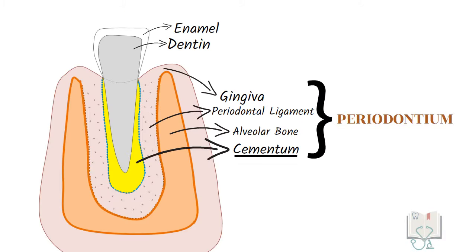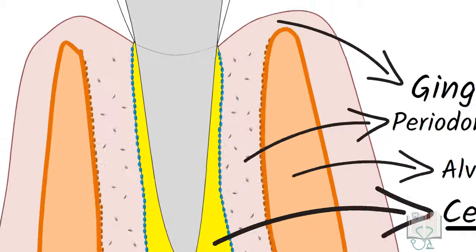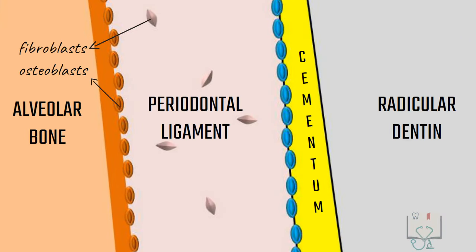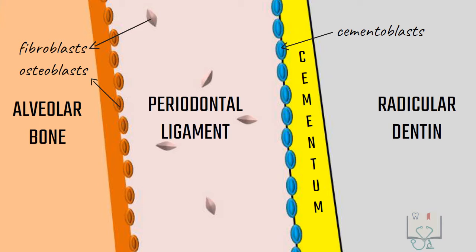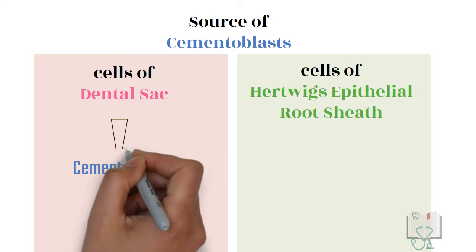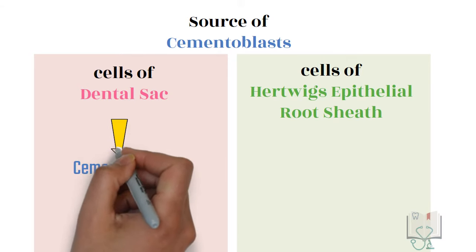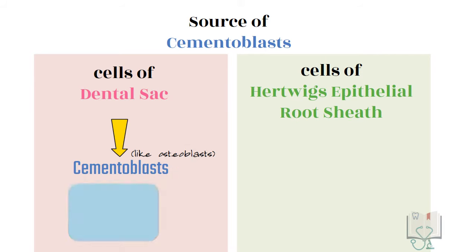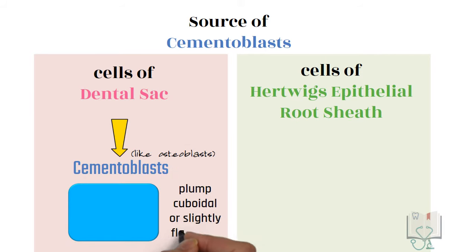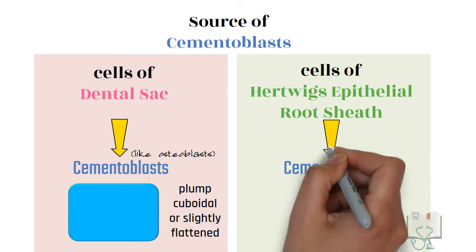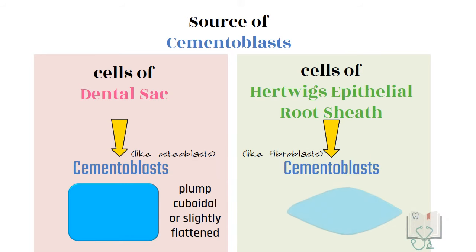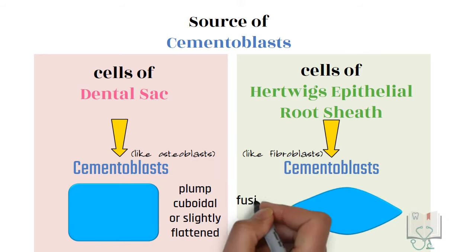Cementoblasts: In the periodontium, on looking closely, we see cementoblasts present at the periphery of the cementum towards the periodontal ligament. Cementoblasts differentiating from the cells of the dental sac are similar to osteoblasts — they are plump, cuboidal, or slightly flattened cells. Whereas cementoblasts differentiating from the cells of Hertwig's epithelial root sheath are similar to fibroblasts — they are fusiform-shaped cells.